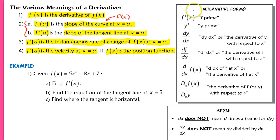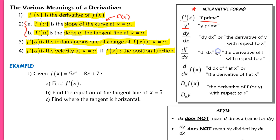Back to the note sheet — under the box labeled 'Alternative Forms,' you'll see all the different notation used to express a derivative. We've started with f prime. You might also see y prime, or dy dx, which means the derivative of y with respect to x. df dx is also common, meaning the derivative of f with respect to x. These are all different ways of saying the exact same thing.